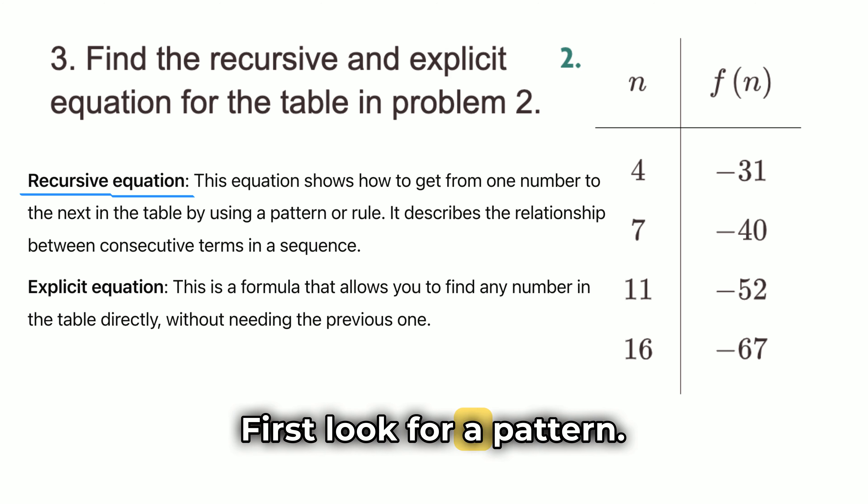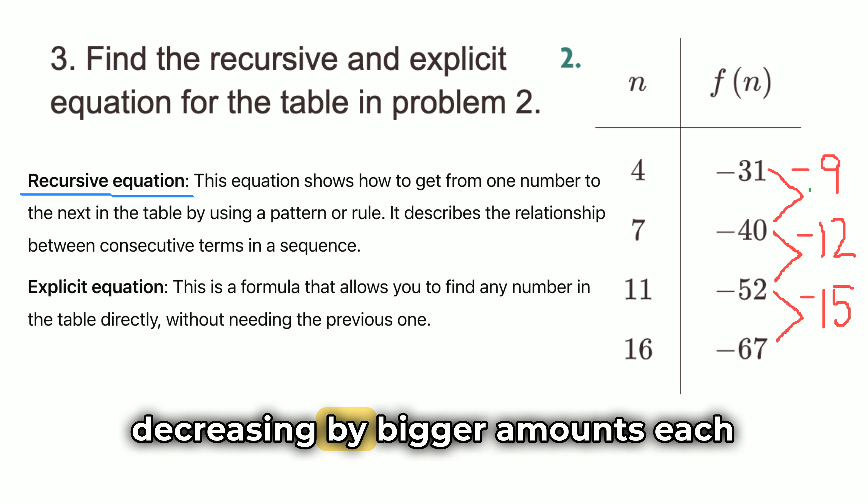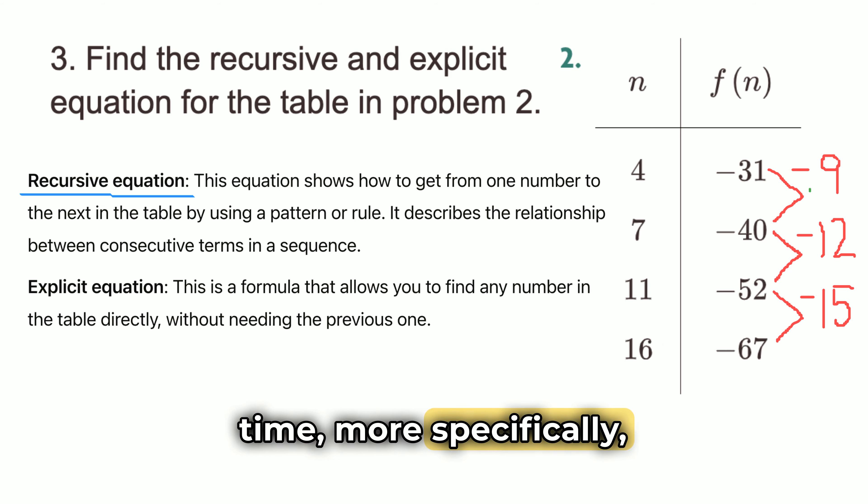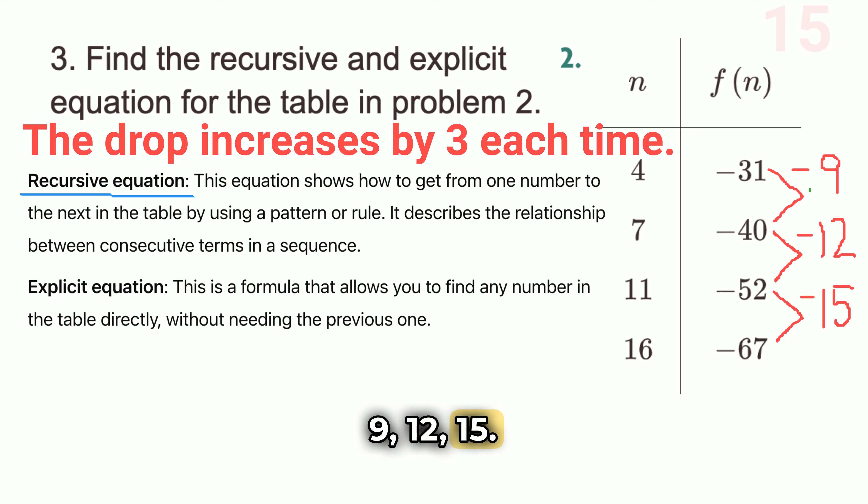First, look for a pattern. See how the values of f of n changes. I noticed that from 4 to 7, the value drops by 9. Then, from 7 to 11, the value drops by 12. And from 11 to 16, the value drops by 15. This tells us there's a steady pattern where the numbers are decreasing by bigger amounts each time. More specifically, the drop increases by 3 each time. 9, 12, 15.